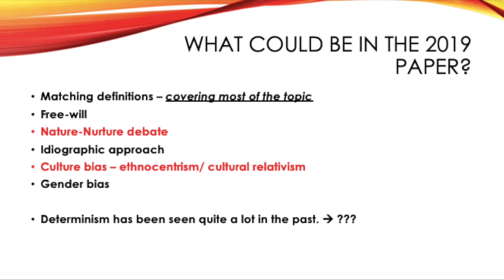Finally there's gender bias. I think this one is probably less likely but it may still come up. You've got alpha bias whereby the differences between males and females are exaggerated or overestimated, which typically leads to the devaluing of females. You've also got beta bias whereby the differences between males and females are minimised or underestimated. And finally there's androcentrism, whereby normal behaviour is judged according to male standards, which typically leads to female behaviour being judged as abnormal.